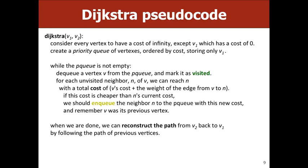The pseudocode: we start at the source vertex — in our example, A — with a cost of zero. All other nodes start with infinite cost. We use a priority queue ordered by cost, and while the PQ is not empty, we dequeue the least-cost node and mark it as visited. Then we look at the cost to reach all its neighbors: the cost to a neighbor is at most the cost to reach the current node plus the edge cost to that neighbor.